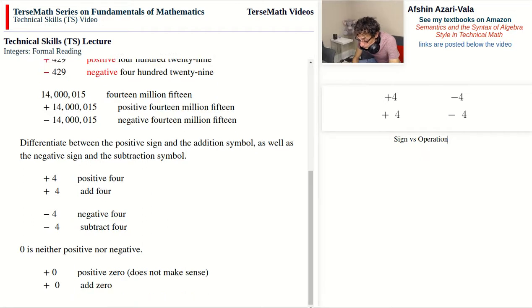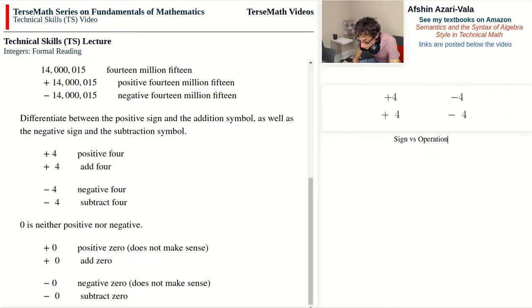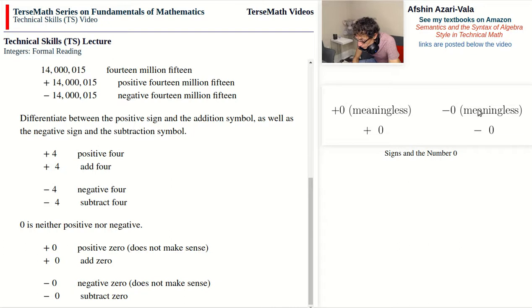Although you can of course add zero. This is now, there is a bit of space to indicate that we are adding. And that one does make sense. And similarly on the negative side, negative zero does not make sense. But we can always subtract zero if we want to. So the image for it is here. Positive zero is meaningless. Add zero, that's okay. Negative zero is meaningless. But subtract zero is all fine.